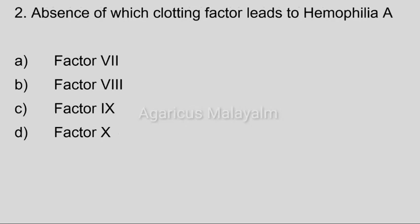Second question: Absence of which clotting factor leads to hemophilia A? Answer options: Option A, factor 7. Option B, factor 8. Option C, factor 9. Option D, factor 10. Correct answer: Option B, factor 8. Hemophilia A is factor 8 deficiency, also known as classic hemophilia A. This is a genetic disorder.